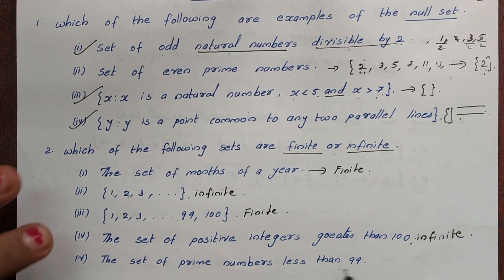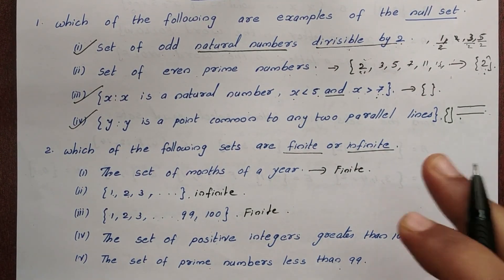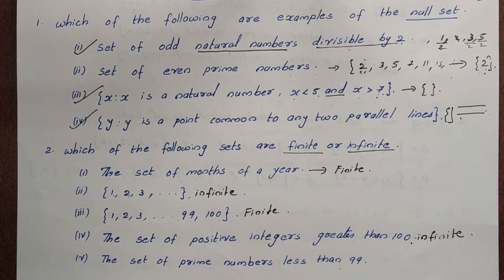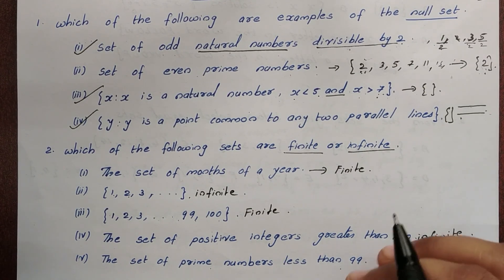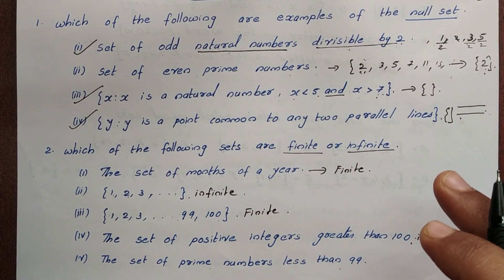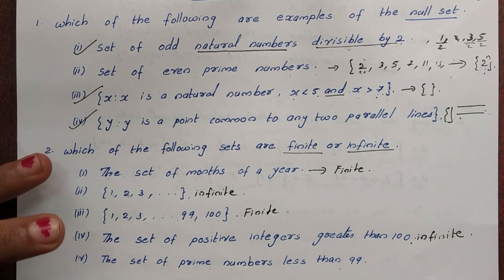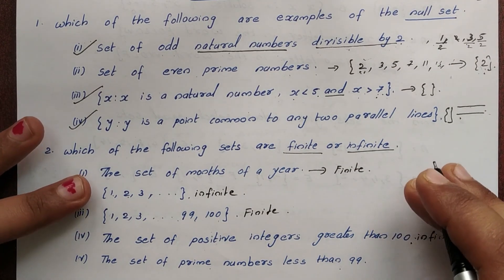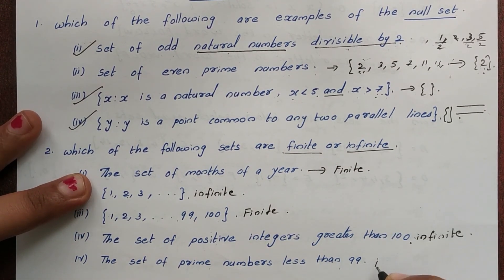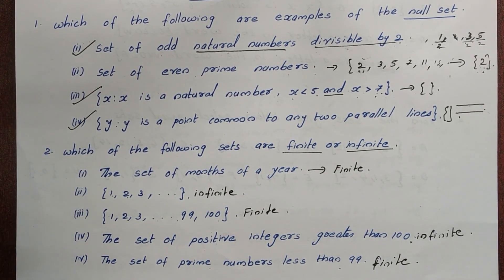Set of prime numbers less than 99. We can list the prime numbers up to 99. We can count them, so this is a finite set.